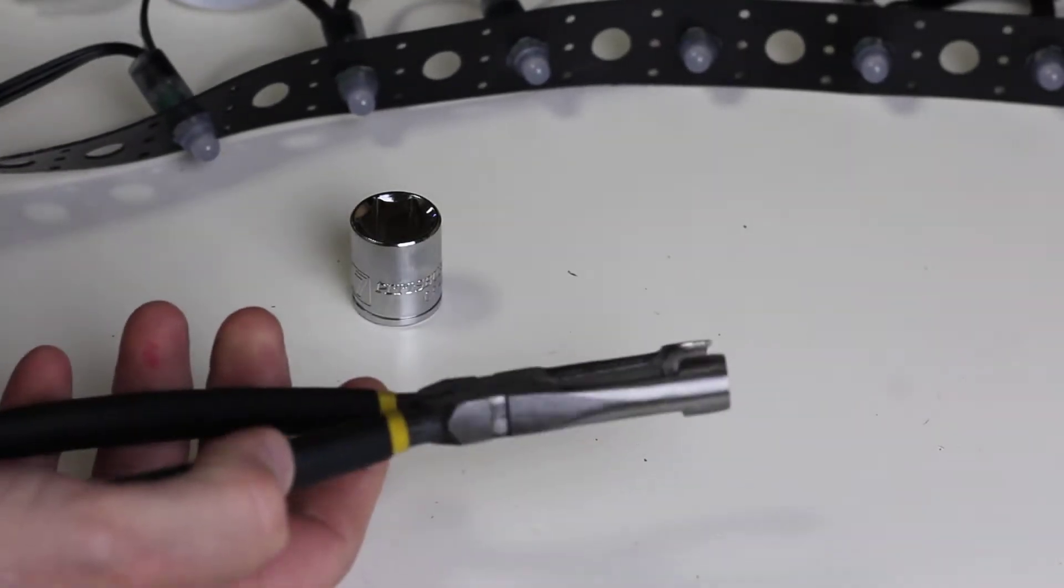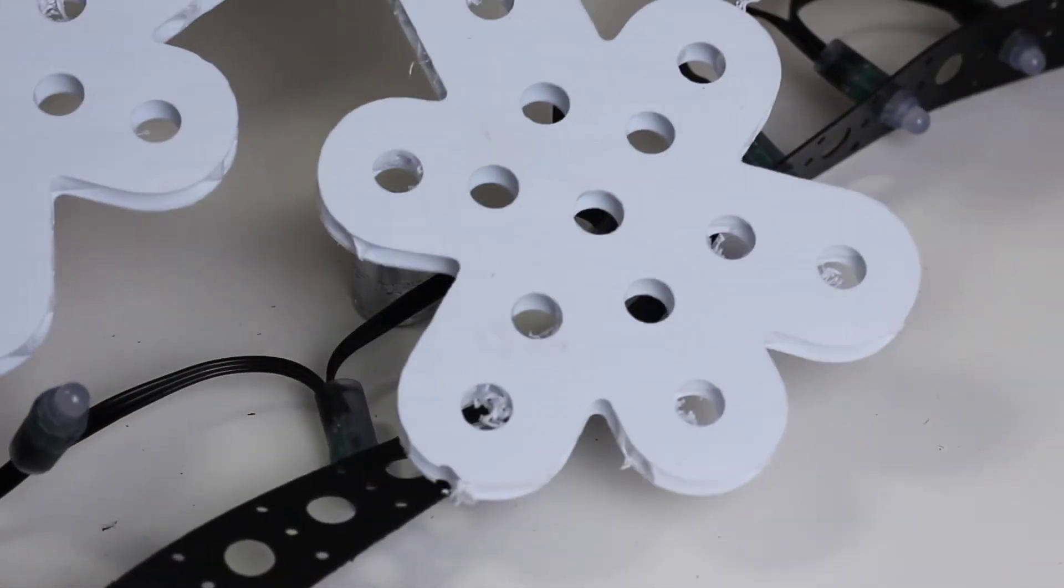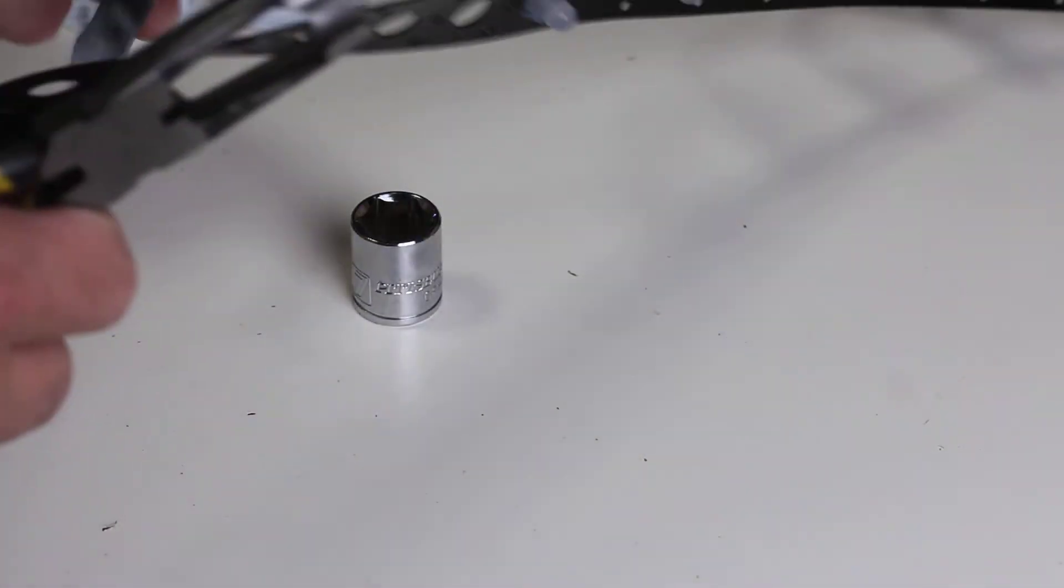This video shows how to use Holiday Coro Pixel Pliers to install your pixels into Pixnode Strip and into our 10mm or 4mm Coro items.